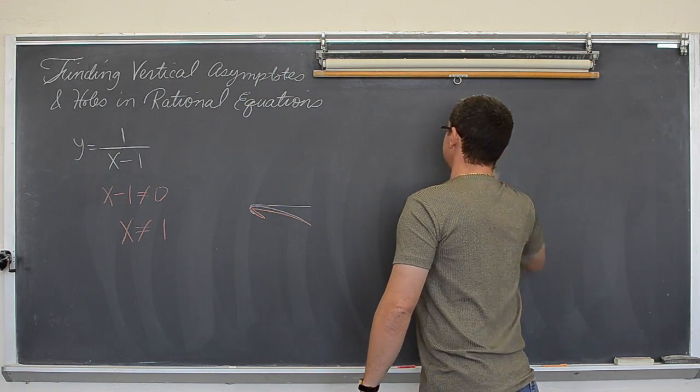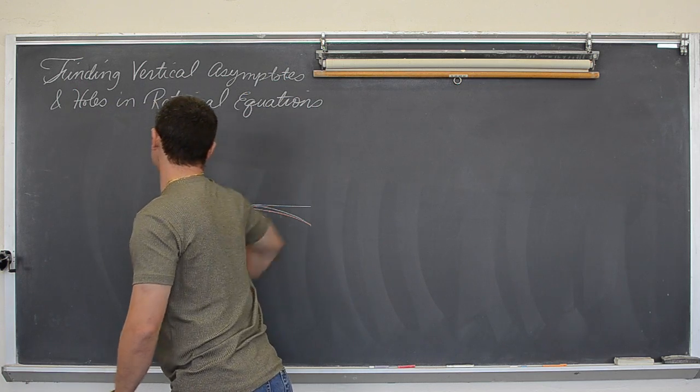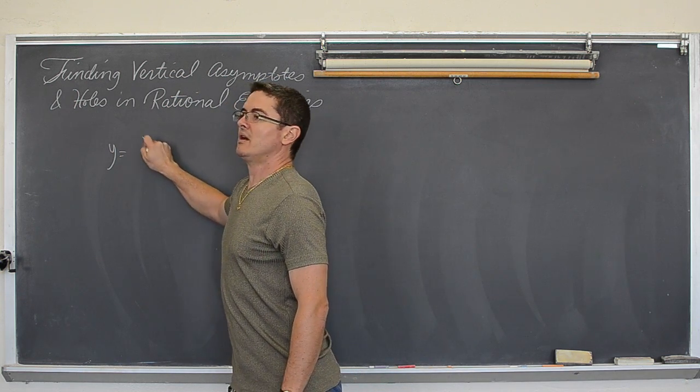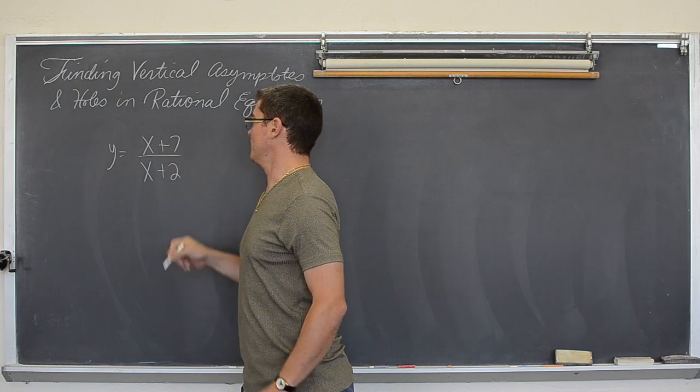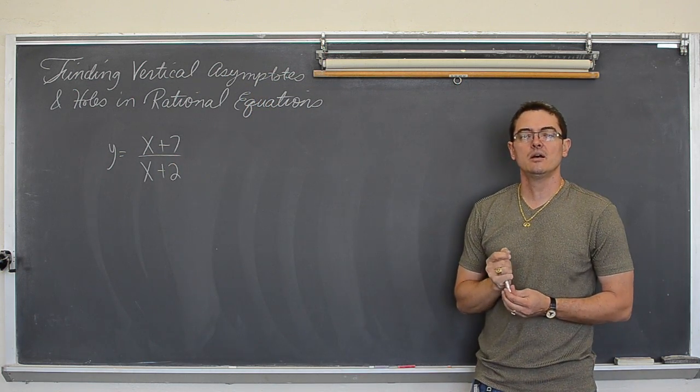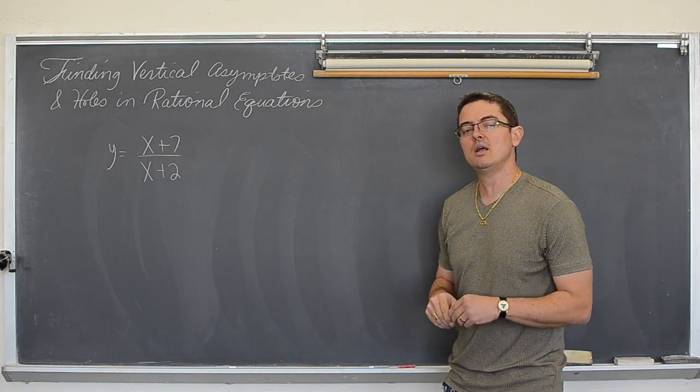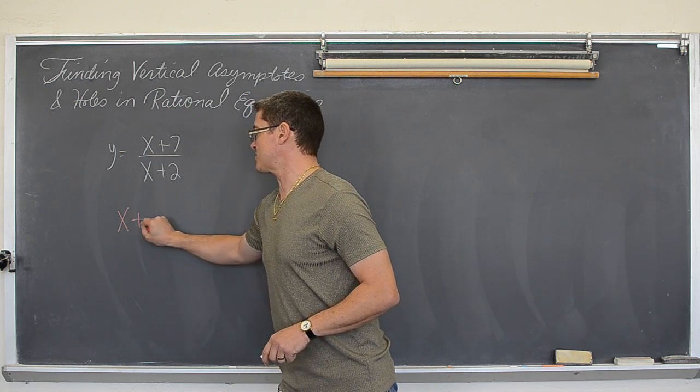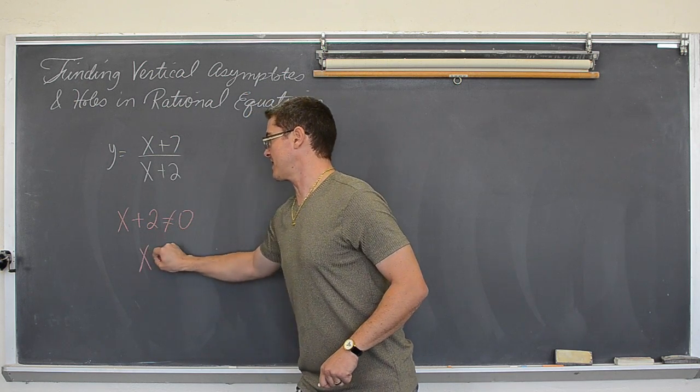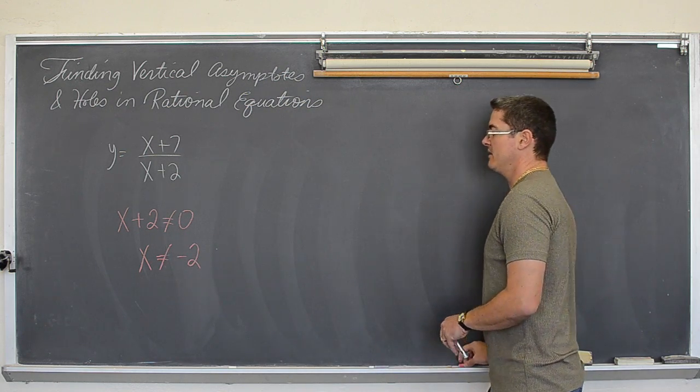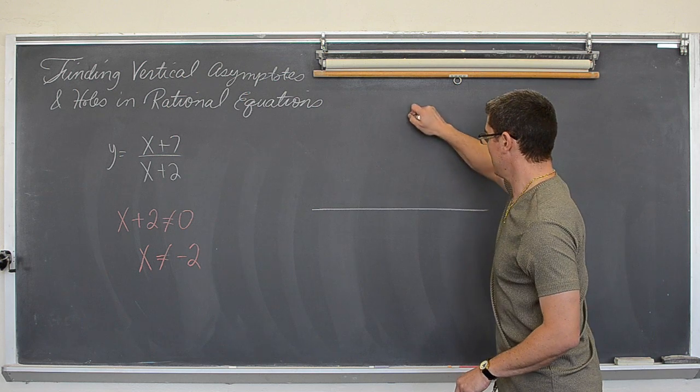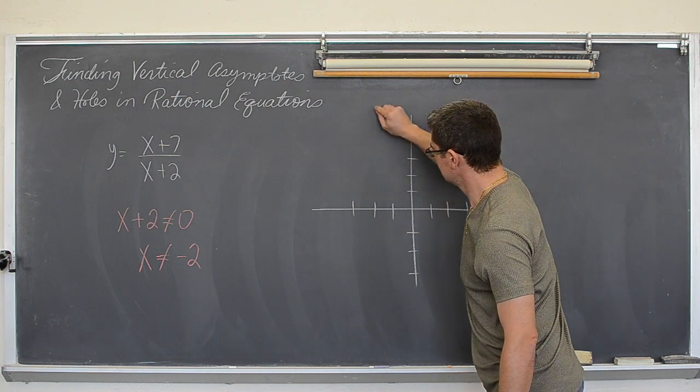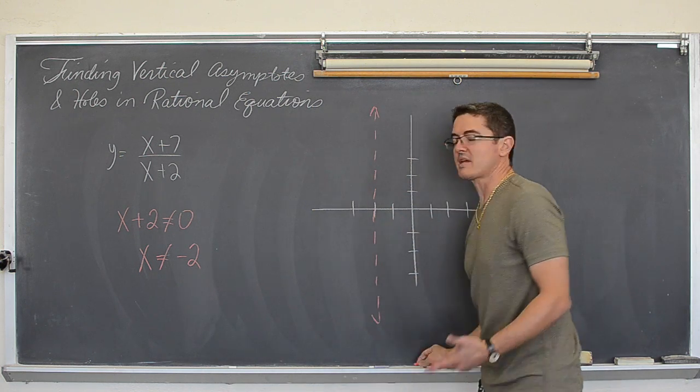One more example like that. This time I'm going to cheat and use my graphing calculator to give me a table. We're going to have y equals x plus seven over x plus two. Now again, I told you you cannot divide by zero. If I can make this denominator equal to zero, then that's probably a vertical asymptote. So x plus two cannot equal zero. So x cannot equal negative two. And I contend that at negative two, there is going to be a vertical asymptote.